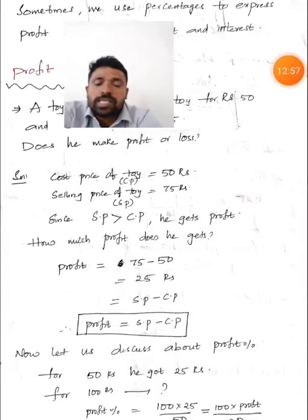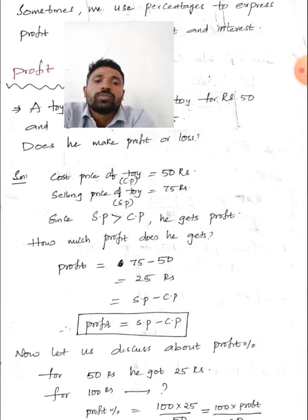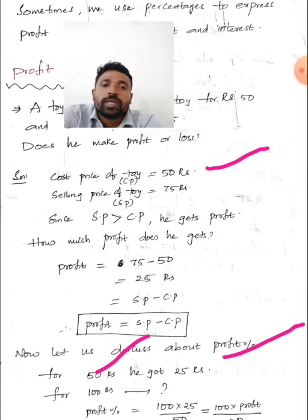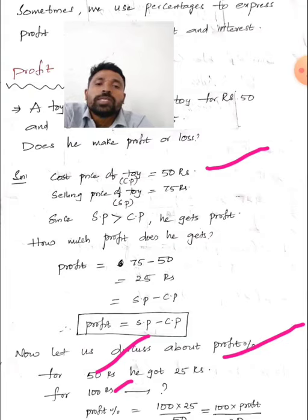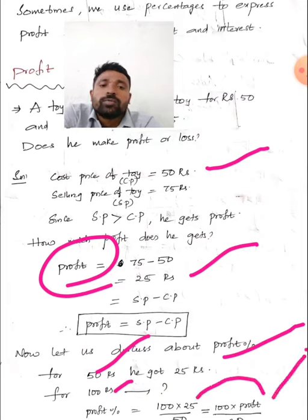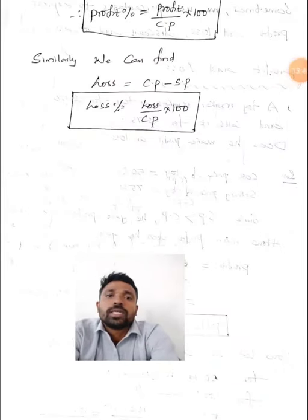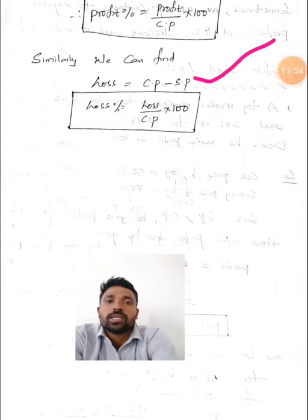Now let us find the profit percentage. For a cost price of 50 rupees, he got 25 rupees profit. To find the percentage per every hundred: Profit% = (Profit / CP) × 100 = (25 / 50) × 100 = 50%. Similarly, we can derive the loss formula: Loss = CP − SP, and Loss% = (Loss / CP) × 100.